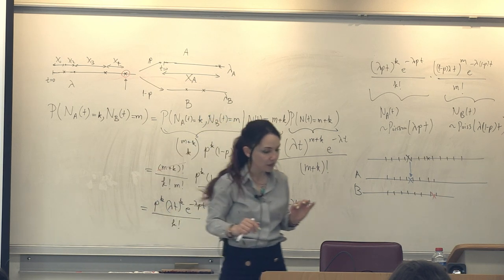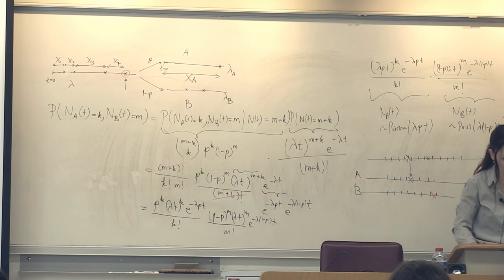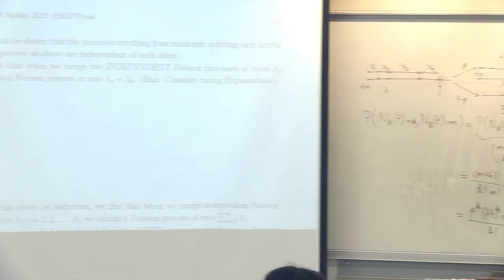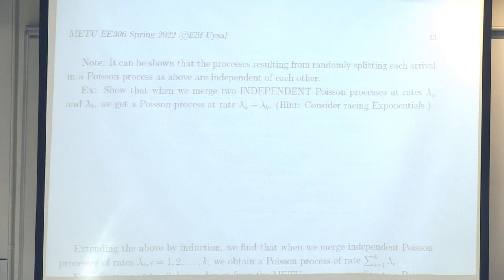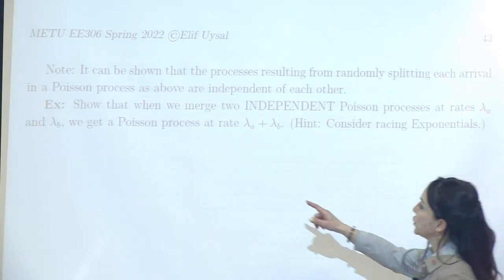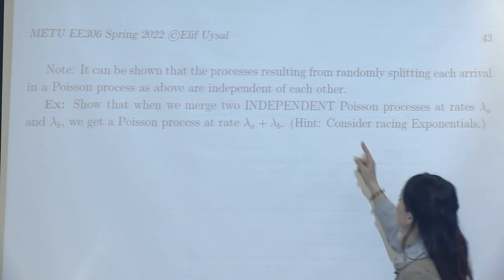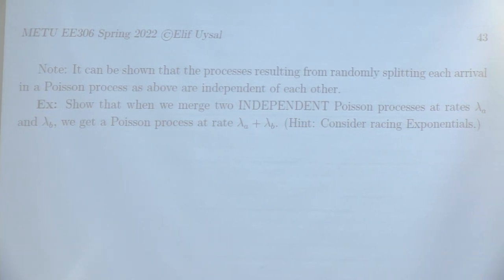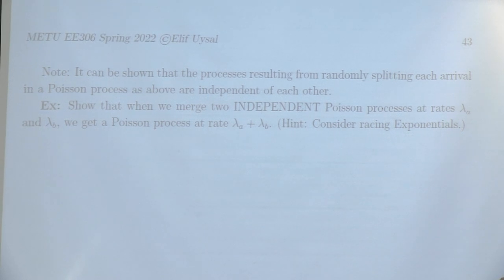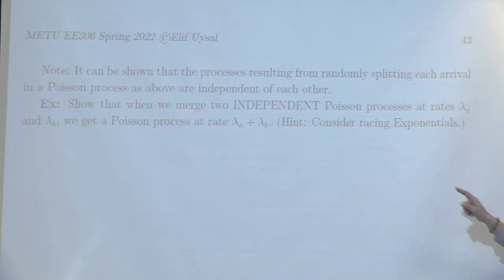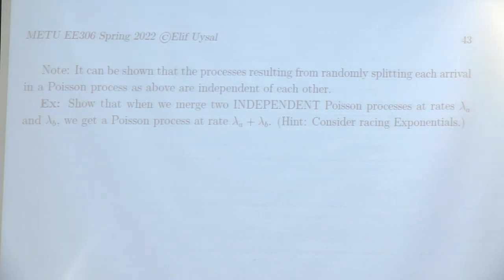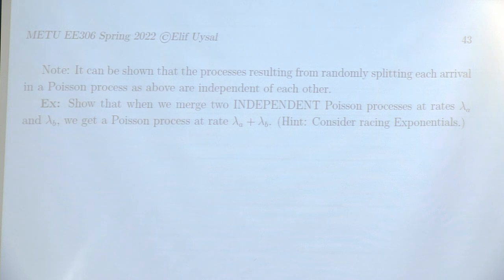Now let's consider merging Poisson processes. Show that when we merge two independent Poisson processes at rates λ_A and λ_B, we get a Poisson process at rate λ_A + λ_B. Independence here is important — if you merge any two Poisson processes without independence, you don't necessarily get a Poisson process. The hint says: consider racing exponentials.